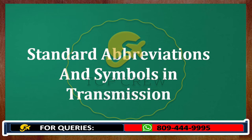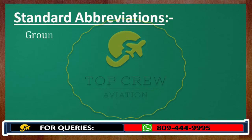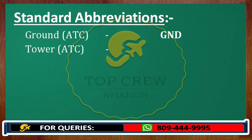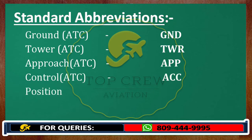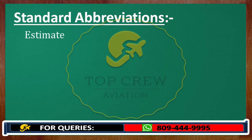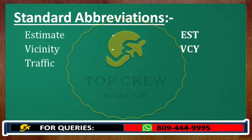for Ground ATC we write GND. Tower — TWR. Approach — APP. Control — ACC. Position — PSN. Next — NXT. Estimate — EST. Vicinity — VCY. Traffic — TFC.